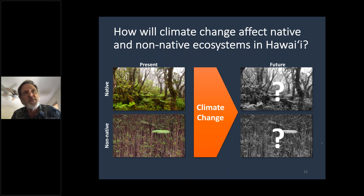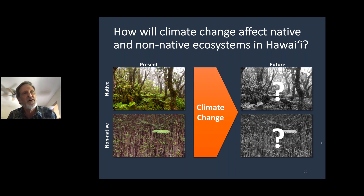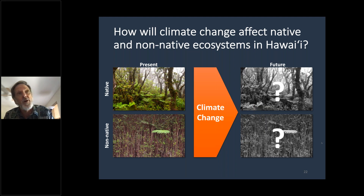I want to say a few words about what we've been able to find in our studies about how climate change will affect these processes — transpiration, for example — and also how it can affect the competition between native and non-native species in our forests. We know it's going to get warmer, but what will happen in a warmer climate? Will the difference between transpiration of native and non-native trees increase or will they become more similar? And will the competitive advantage and growth rates of invasive plants become greater under warmer, sunnier, drier, or wetter conditions in the future?